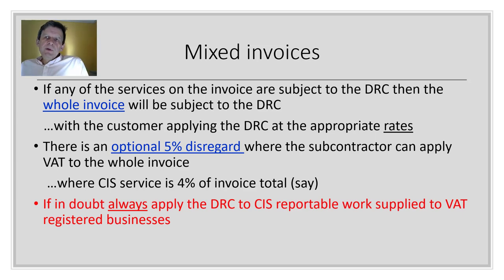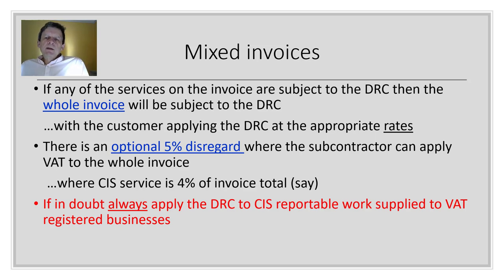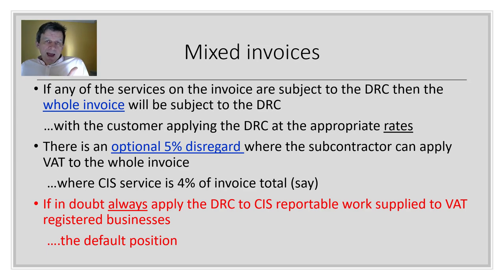HMRC make an important statement throughout their guidance: if in doubt, always apply the DRC to CIS reportable work supplied to VAT-registered businesses. It is the default. The two key conditions are that the service must be CIS reportable and it must be VAT-registered to VAT-registered. If you meet those conditions, assume the DRC applies — the invoice goes out with no VAT and all the required domestic reverse charge narrative.